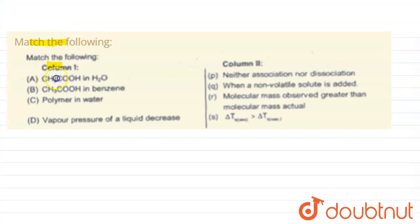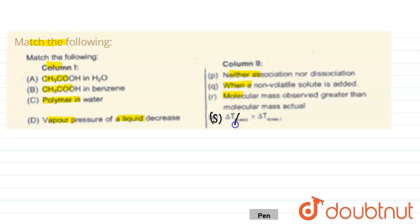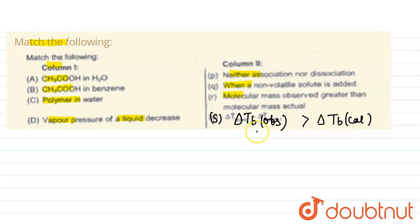In the given question we have to match the following. In column one we have: acetic acid in water, acetic acid in benzene, polymer in water, and vapor pressure of liquid decreases. In column two there are related statements. The fourth option is delta tb observed greater than delta tb calculated.